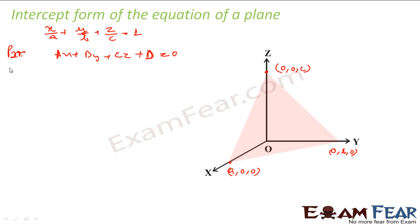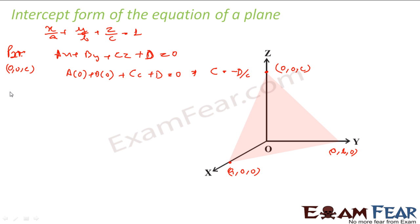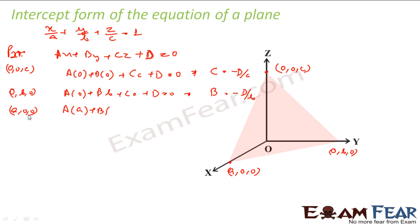Let us put the point (a, 0, 0): we get A·a + B·0 + C·0 + d = 0, so capital A = −d/a. Similarly, put the point (0, b, 0): we get A·0 + B·b + C·0 + d = 0, so capital B = −d/b. And putting (0, 0, c): we get A·0 + B·0 + C·c + d = 0, so capital C = −d/c.